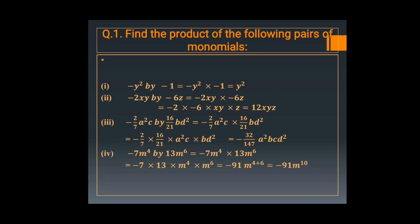The third part: minus 2 upon 7 a square c multiplied by 16 upon 21 b d square. Minus 2 upon 7 into 16 upon 21 gives minus 32 upon 147. Then a square c into b d square equals a square b c d square.